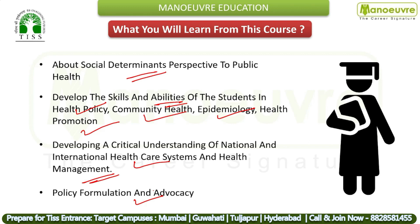Over two years, through classroom teaching, fieldwork, research, and other academic engagements, students develop analytical and practical skills for public health social work practice. The program covers health policy analysis, advocacy, networking, community health, epidemiology, health communication, management of health programs, and how to design, implement, and manage interventions in the field of health. By the end of two years, students are well equipped to work in public health programs, health emergencies, civil society, international NGOs, and health movements.